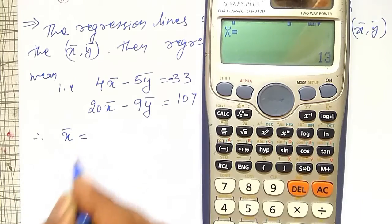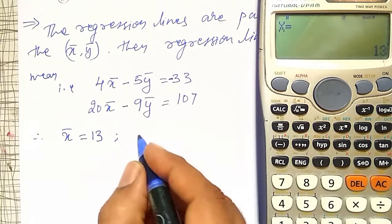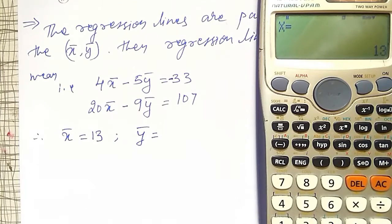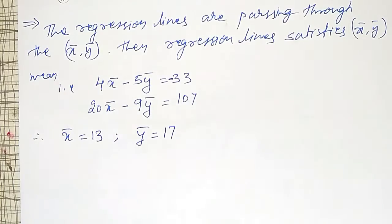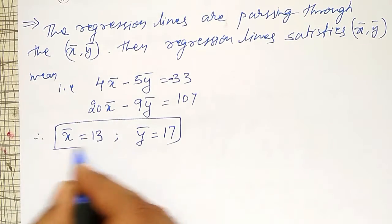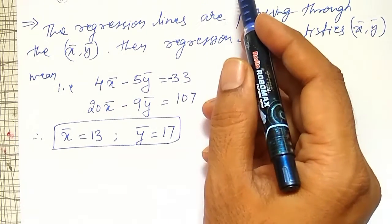I will change it as minus 33, then equal to x = 13. Therefore my x̄ value equal to 13. Similarly, ȳ equal to 17. These are my x̄ and ȳ values. First question is over.